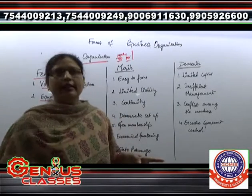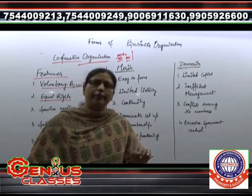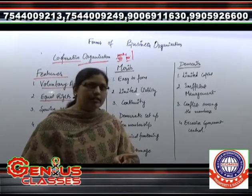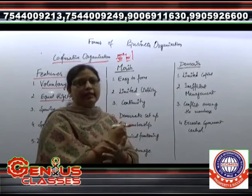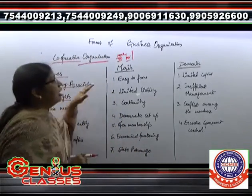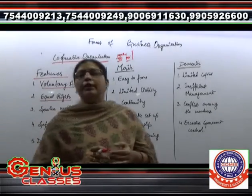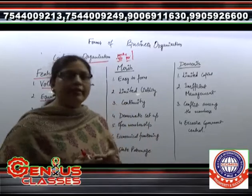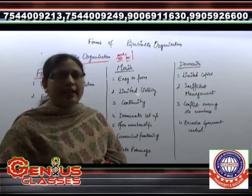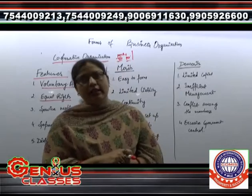Yahan pe ye matter nahi rakhta ki aapne capital investment zyada ki hai aur doosre ne kam ki hai. Yahan pe hamaara important feature aur aata hai — democratic set up. Yahaan one man one vote ki baat ki jaati hai. Ek individual cooperative society mein ek lakh rupees invest kare aur shyam ne fifty thousand invest kiya — toh dono ko alag-alag rights nahi milenge, dono ko common rights milenge — one man one vote ki tarah hi count kiya jaata hai.